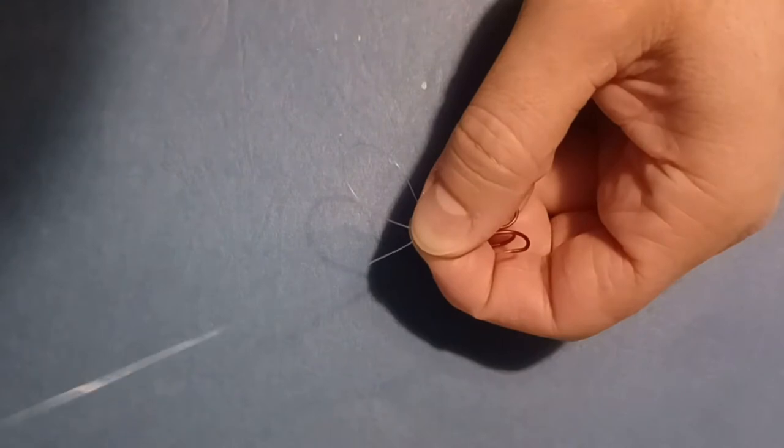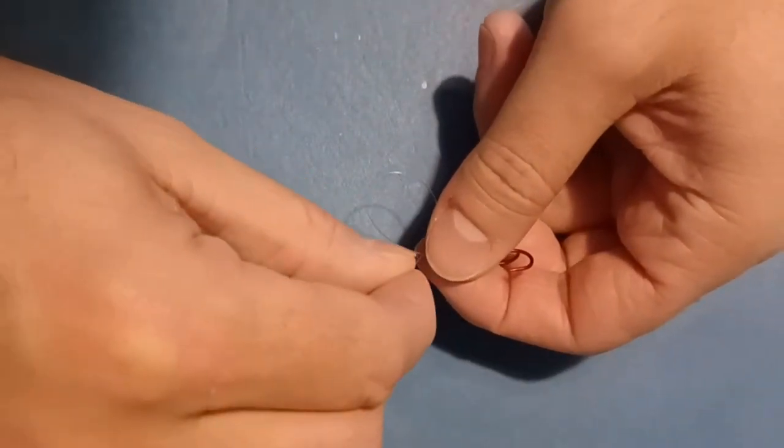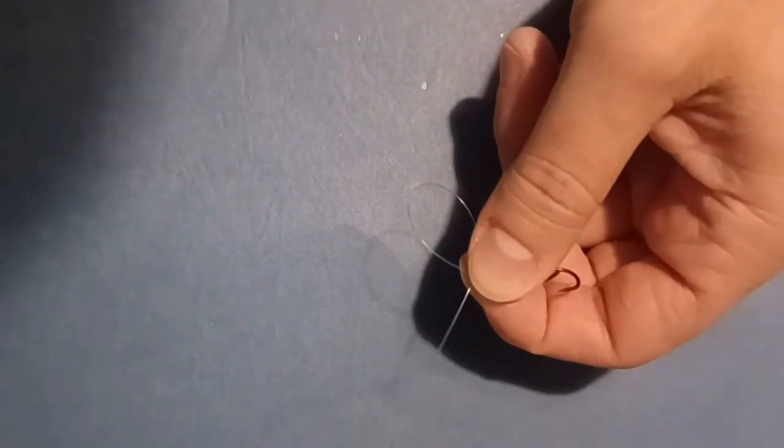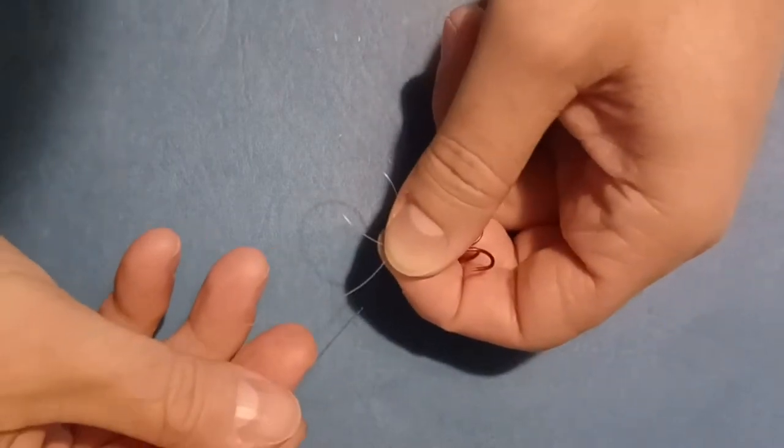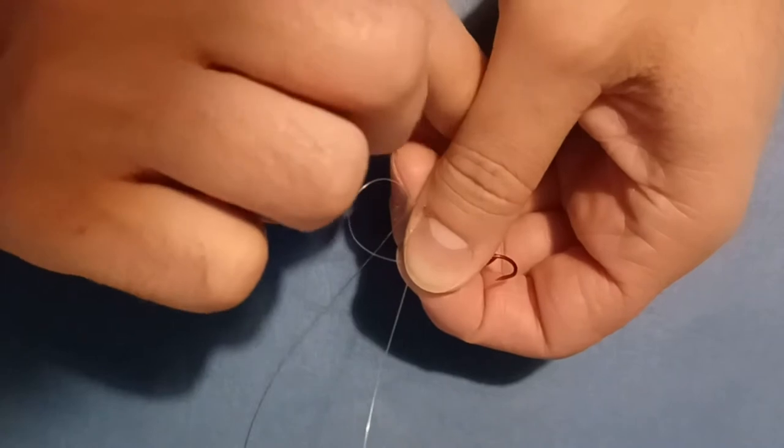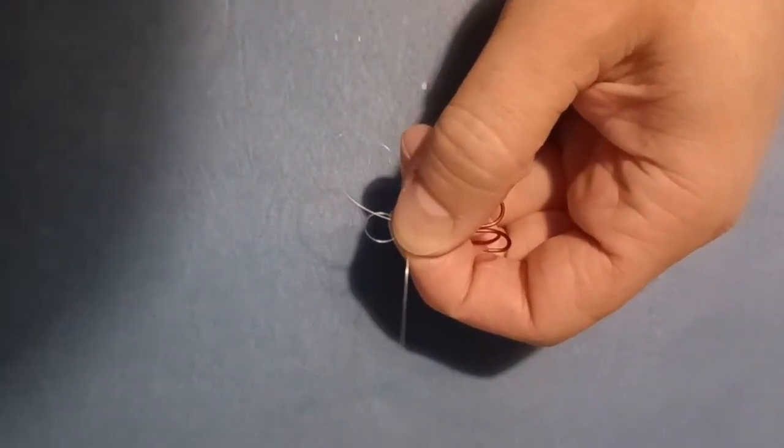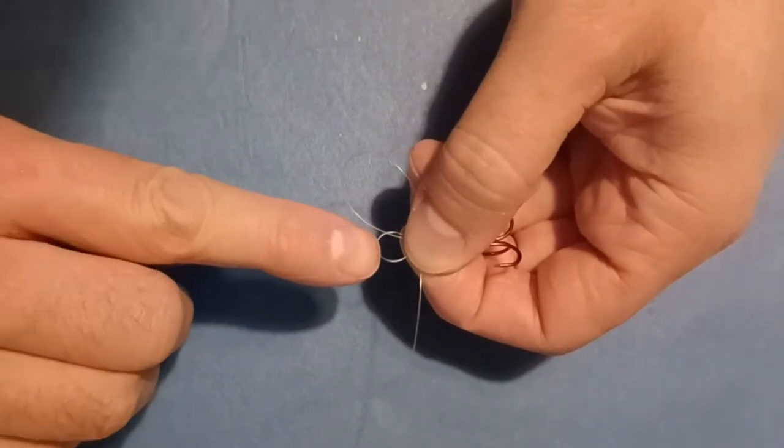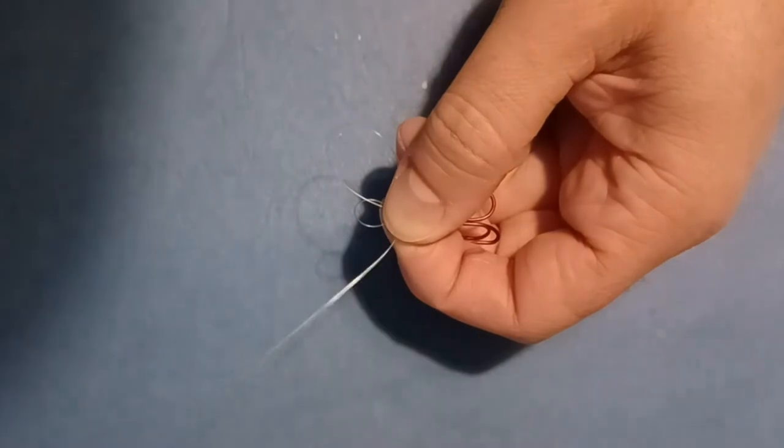Now, in order to do that though, now we need to create a slipknot. So here is your first loop, that first big loop. That's what's going to go over the hook of the jig. And now we have to create a slipknot. And so what I'm going to do is I'm going to take the tag end and go through the bottom of the large loop. And now that small loop there, that is where we're going to create our slipknot. So in order to do that now, I'm going to take the tag end again.